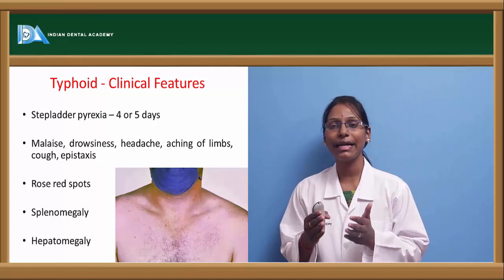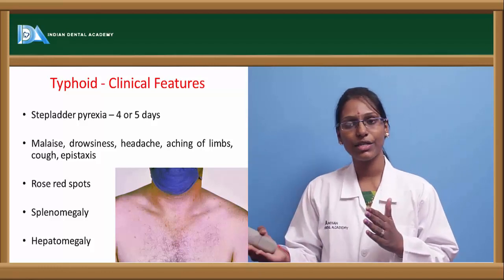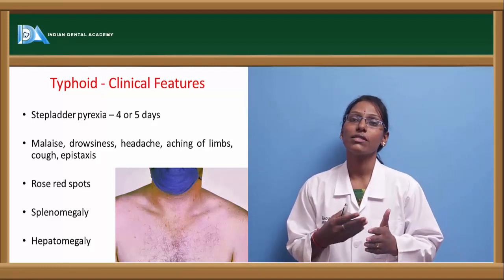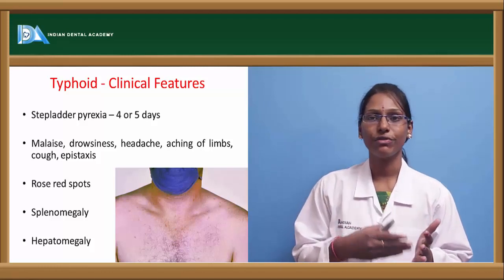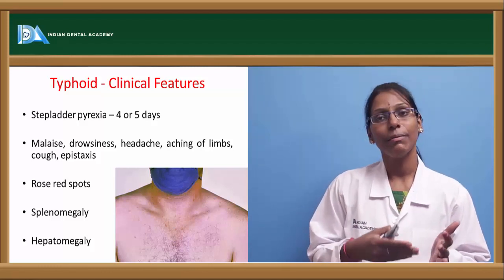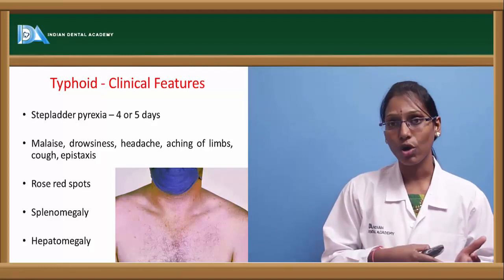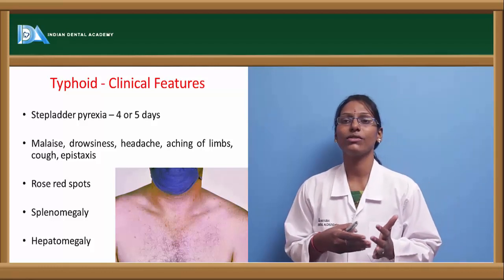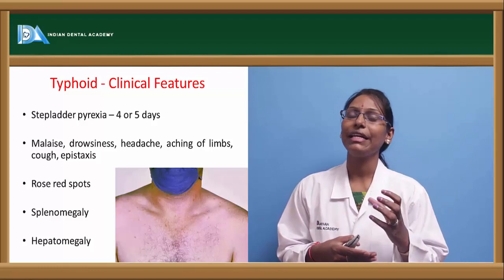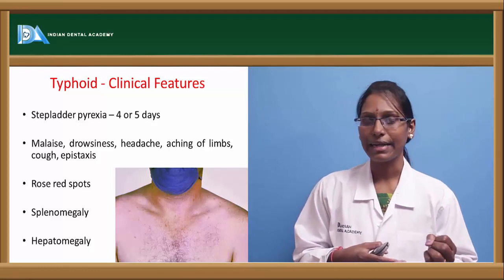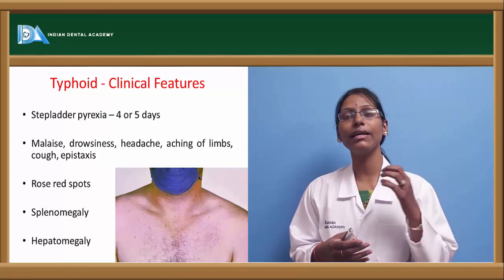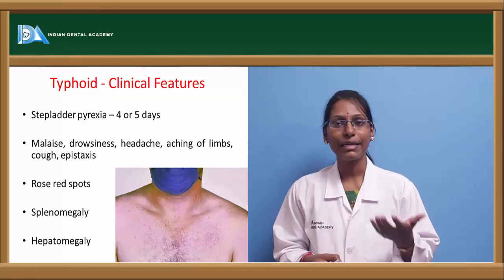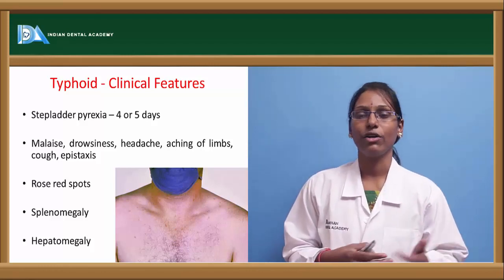At the end of the first week, as the patient enters the second week, they will also have splenomegaly — enlargement of the spleen. At this stage the patient will also have constipation due to enlargement of the ileocecal junction, because the bacilli attack the lymphoid aggregates there, multiply, and cause swelling of that region.